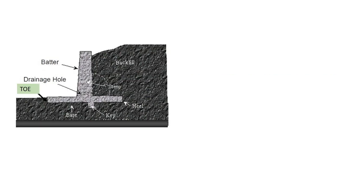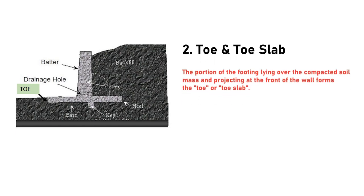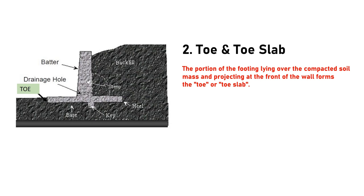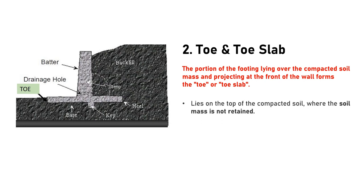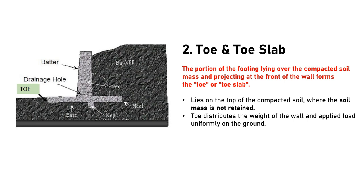Number 2 is the toe and toe slab. The portion of the footing lying over the compacted soil mass and projecting at the front of the wall forms the toe or toe slab. It lies on top of the compacted soil where the soil mass is not retained, and is also referred to as the base footing of the retaining wall. The toe helps distribute the weight of the wall and the applied load uniformly on the ground below, and can be extended beyond the face of the wall to increase the overall stability of the structure.